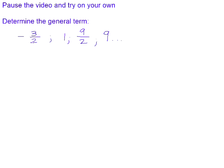There is an example for you to try — please pause the video and try it on your own. Determine the general term. Again, we start by investigating the differences. For the first differences: 1 subtract negative 3 over 2 is positive 5 over 2; 9 over 2 subtract 1 is 7 over 2; and 9 subtract 9 over 2 is 9 over 2. For the second differences: 7 over 2 minus 5 over 2 is 2 over 2, which is 1; and 9 over 2 minus 7 over 2 is also 2 over 2, which is 1.